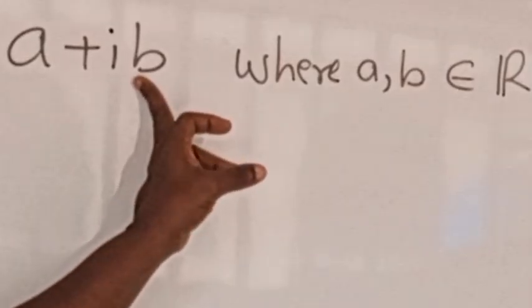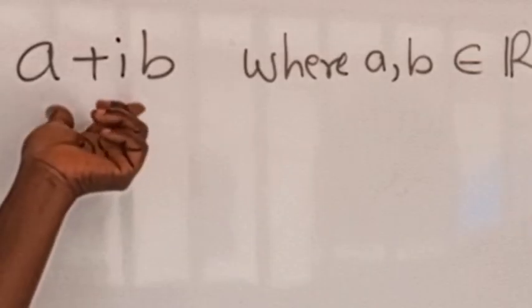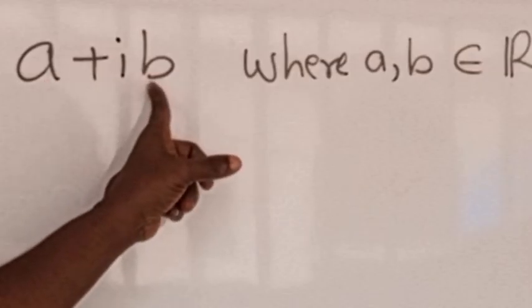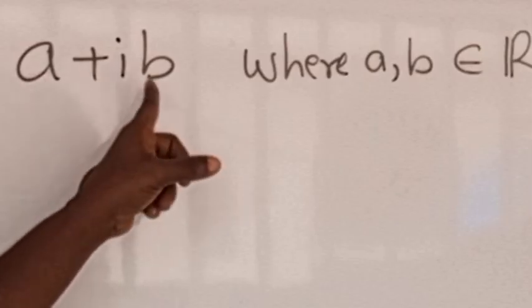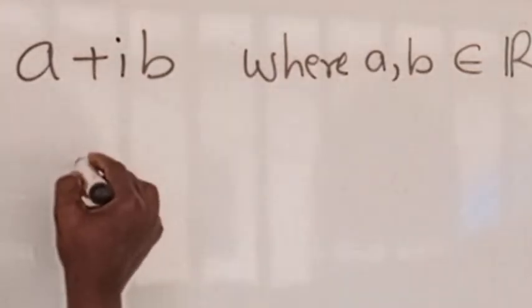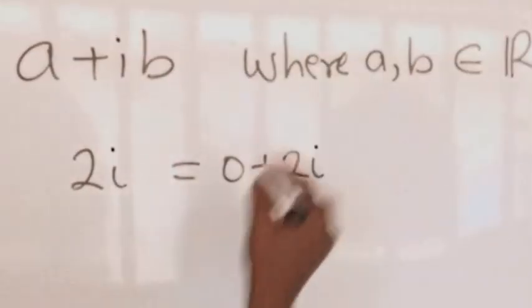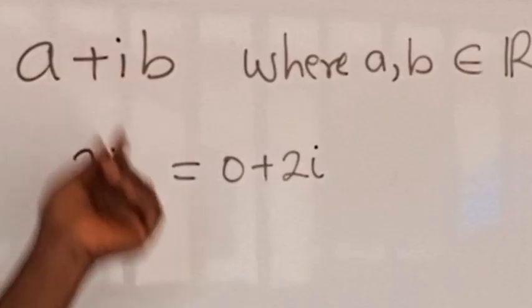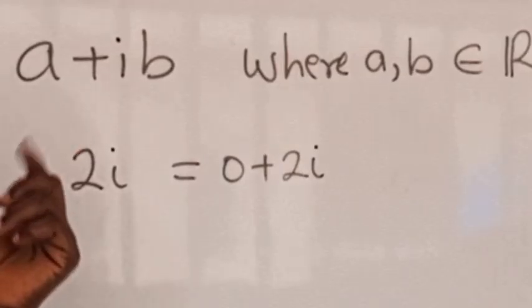We have the solution in the set of complex numbers. Remember, any number of the form a plus ib, where a and b are real numbers, is a complex number. A complex number is made up of two parts: the real part and the imaginary part. When the real part is equal to zero, that is when a equals zero, we have what we call a pure imaginary number. For example, 2i is equal to zero plus 2i, so it is a complex number that is pure imaginary.